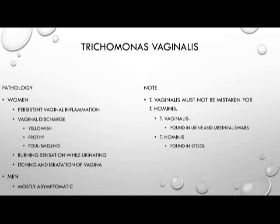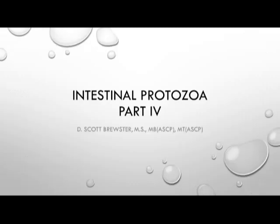Trichomonas vaginalis must be differentiated from Trichomonas hominis. One of the easiest ways to do that is that Trichomonas vaginalis is found in the urine or urethral swabs of infected hosts, while Trichomonas hominis is found in the stool. So unless contamination occurs, Trichomonas vaginalis is only going to be seen in the urine, and Trichomonas hominis will be found in the stool. That concludes the third of our four-part presentation series for the intestinal protozoa.